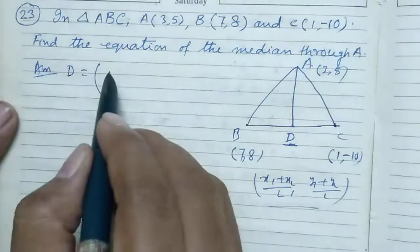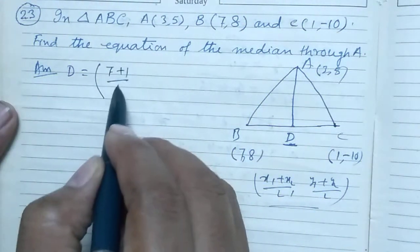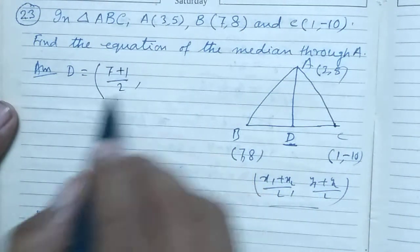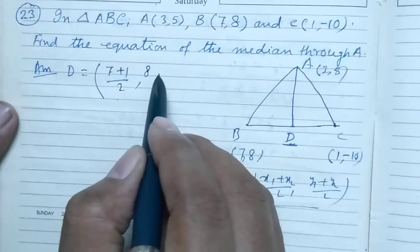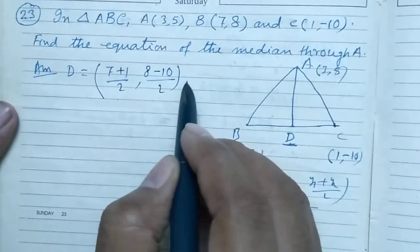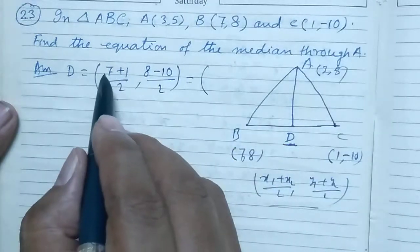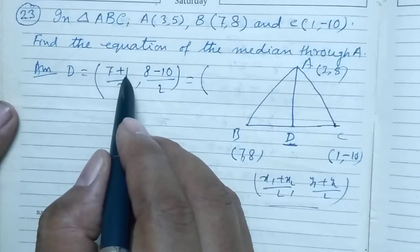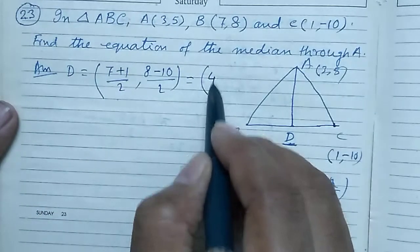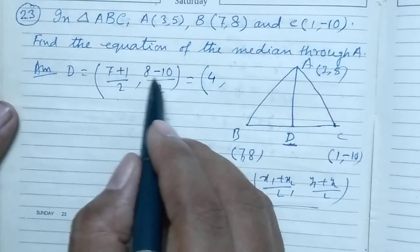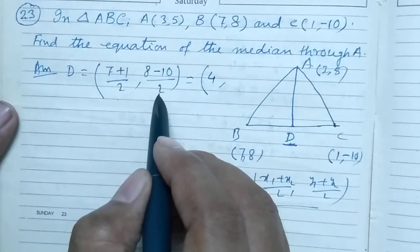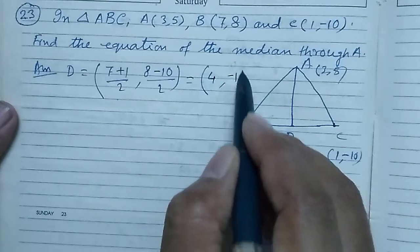X1 is 7 plus 1 by 2, and 8 minus 10 by 2. That equals 7 plus 1, which means 8, 8 by 2 is 4, and minus 2 by 2 is equal to minus 1.